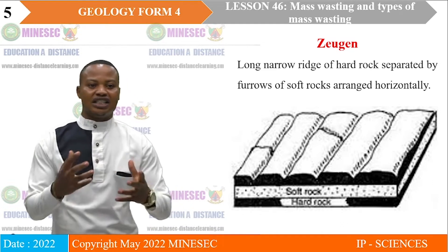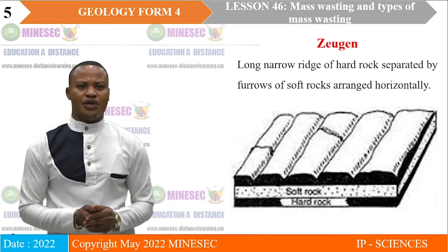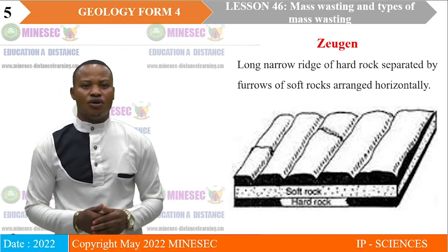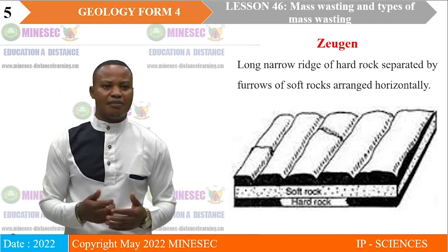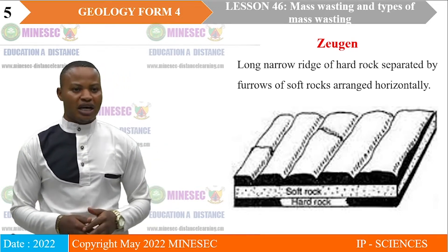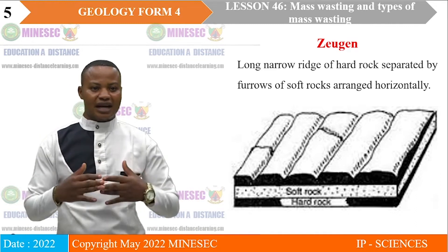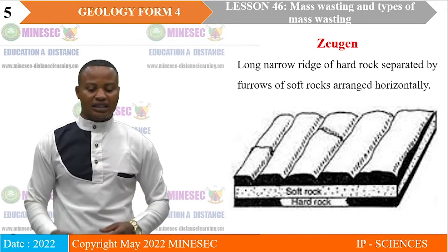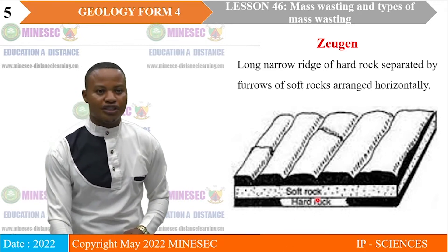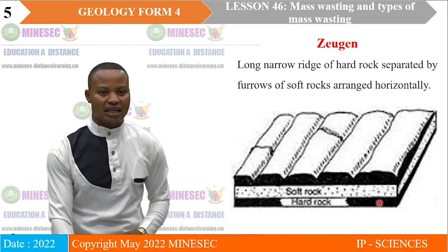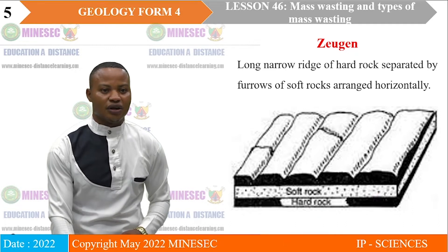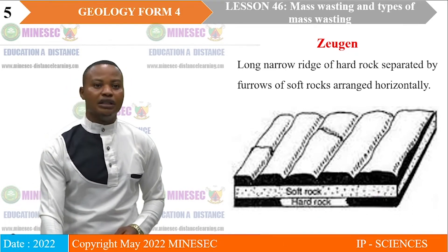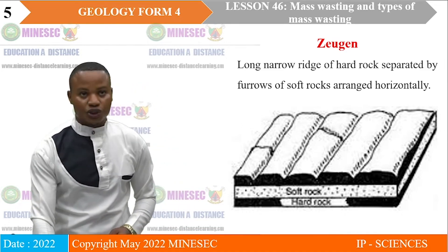The next structure is zeugens. Zeugens are very much similar to yardangs because they are equally long, narrow ridges of hard rocks separated by furrows of soft rocks. But here, the hard layers of rocks and soft layers of rocks are arranged horizontally. This is a hard layer and this, a soft layer. So that is wind-degradational features.